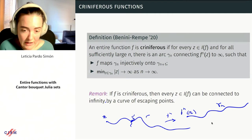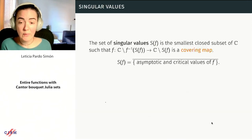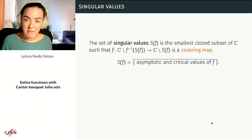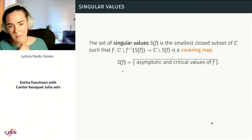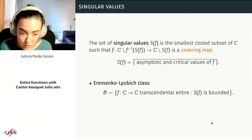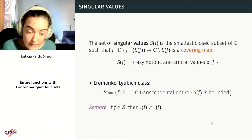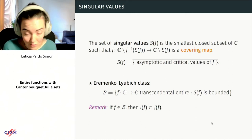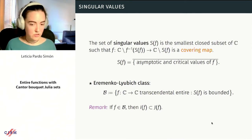This is related to Eremenko's conjecture, and Andrew Brown will tell you more about it later. The dynamics on the set of singular values — where our map fails to be a covering map — play a very important role. We restrict ourselves to the Eremenko–Lyubich class B, which consists of all transcendental entire maps with bounded singular set. For a function in class B, the escaping set has empty interior and therefore is contained in the Julia set. So understanding the escaping set already tells us about the structure of the Julia set.